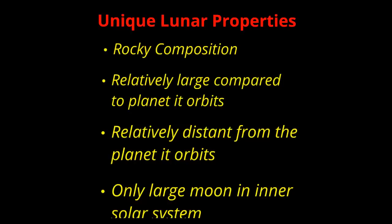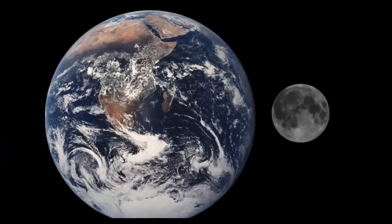Secondly, it's relatively large compared to the Earth. Now, there are bigger moons. In fact, there are moons around Jupiter that are larger than the planet Mercury. But when you compare the moon size to the planet it orbits around, those other moons orbit around a much larger planet, so relatively they're smaller.